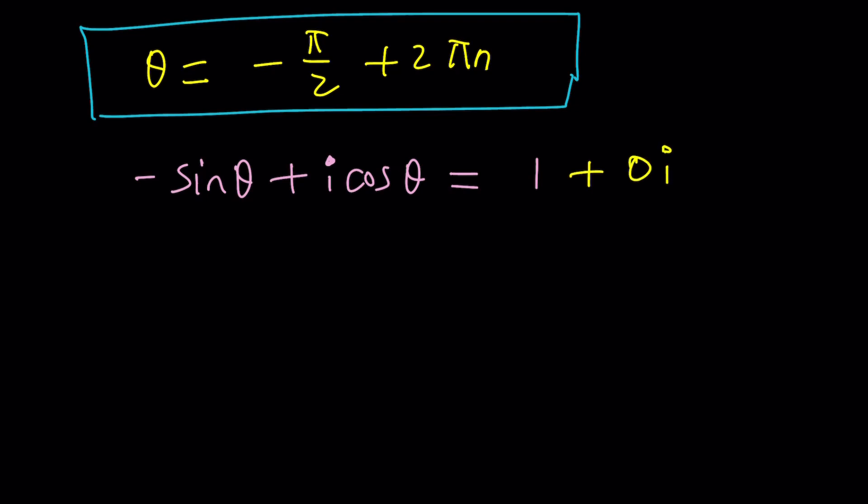We have this property that the real parts have to equal real parts. So this is 1, this is 0. This tells you sine θ is equal to negative 1, and cosine θ is 0.